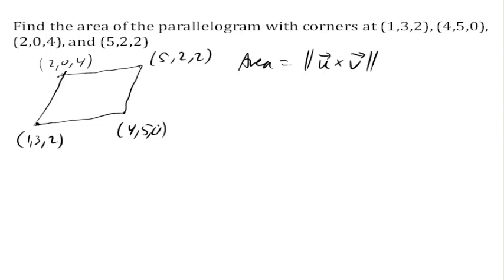So we need to find two vectors which correspond with two sides of the parallelogram. So we could do that here. This side looks like it'd be the vector, let's see here. My x increases by 3, my y by 2, and my z decreases by 2.